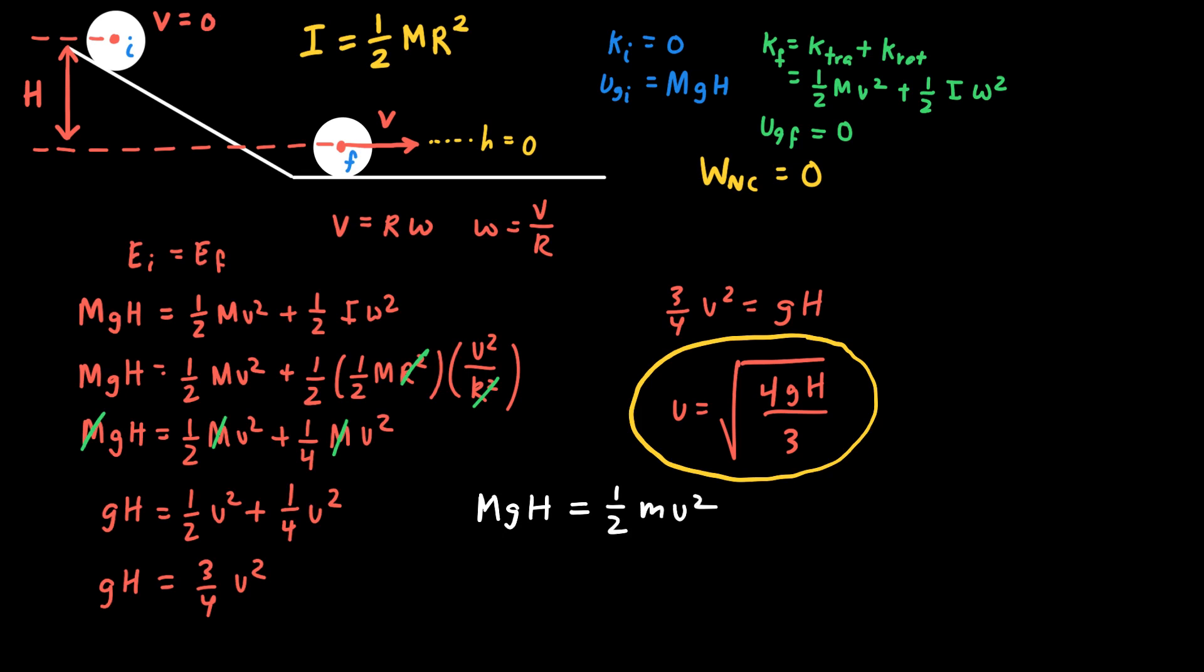But when it gets to the horizontal plane, it wouldn't have any rotational kinetic energy, and so that would just be equal to one-half mv squared. And this is going to give us a familiar result, right? The masses will cancel, and the speed that I get is equal to the square root of two gh.